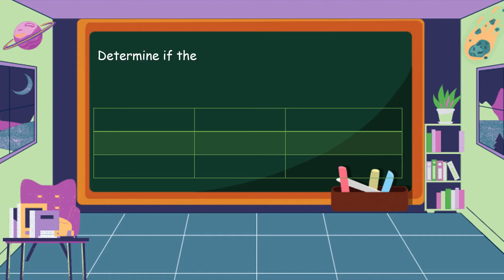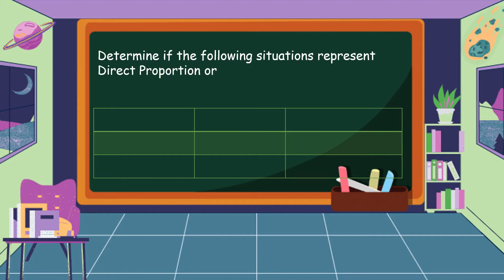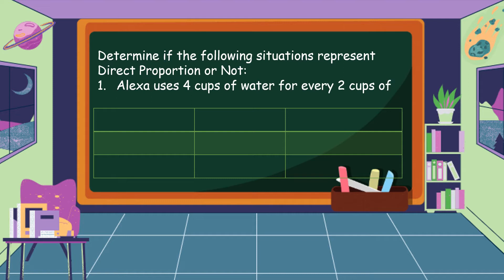Determine if the following situations represent direct proportion or not. Our first situation: Alexa uses four cups of water for every two cups of rice, and eight cups of water for every four cups of rice.